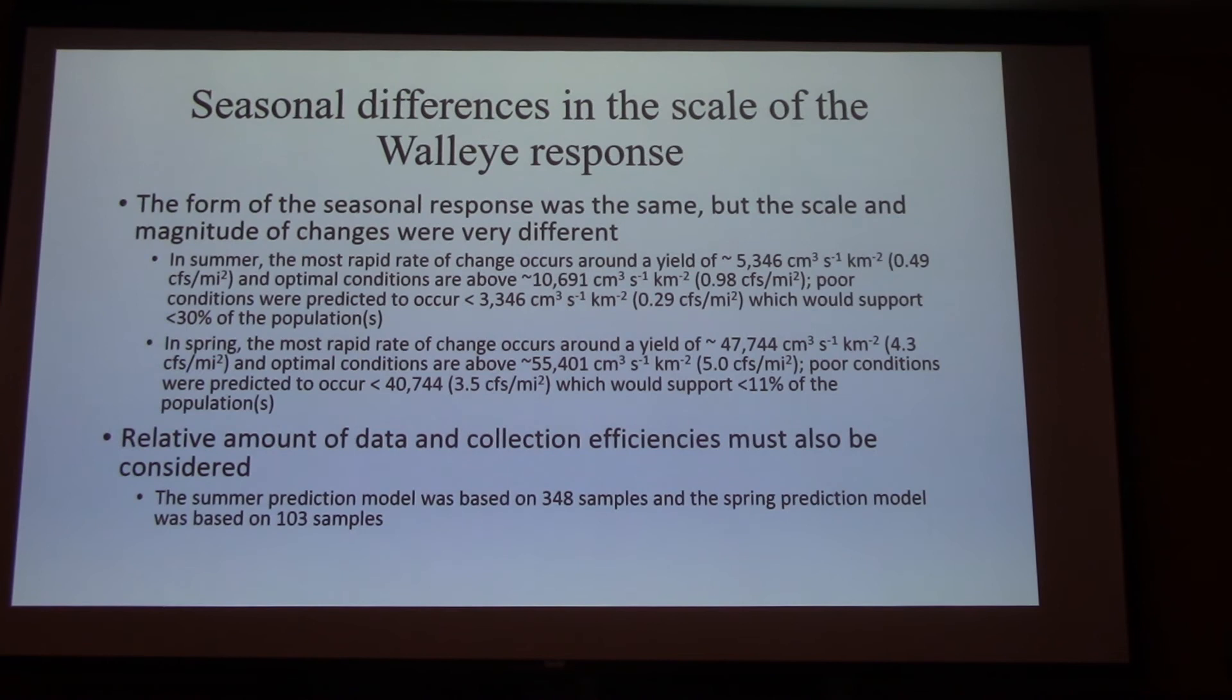In the spring, the most rapid change occurred at four as opposed to a half. And so there's quite a big scale difference in the flows and yields that we're talking about here by season. But the basic shape of the curve and the response is very similar.